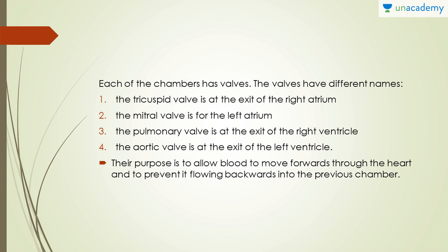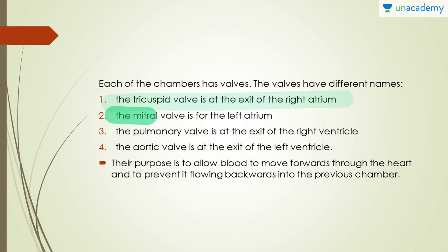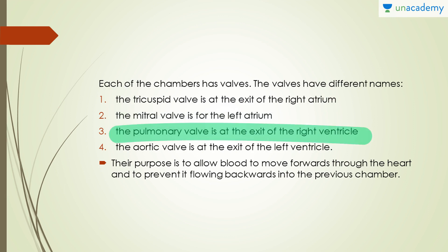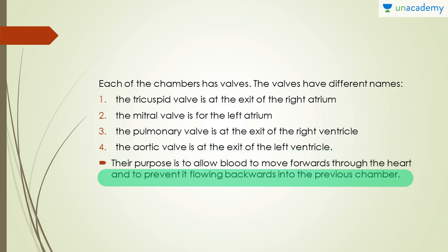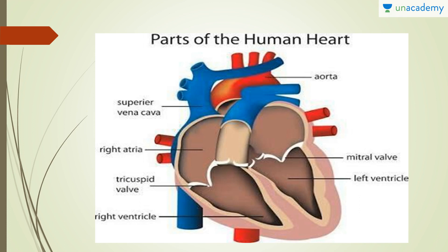Each chamber has valves with different names. First, the tricuspid valve is at the exit of the right atrium. Second, the mitral valve is for the left atrium. Third, the pulmonary valve is at the exit of the right ventricle. Fourth, the aortic valve is at the exit of the left ventricle. The purpose of valves is to allow blood to move forward through the heart and prevent it from flowing back into the previous chamber, reducing the risk of heart attacks and vein blockages.